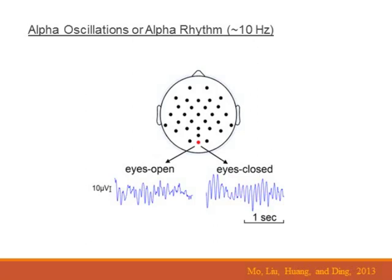The frequency of that is about 10 hertz or 10 cycles per second. When the eyes are open, it becomes less prominent, although still somewhat noticeable. This is called the alpha rhythm or alpha oscillations.